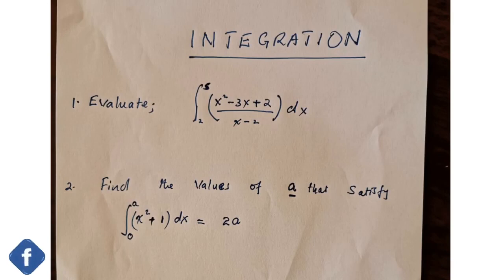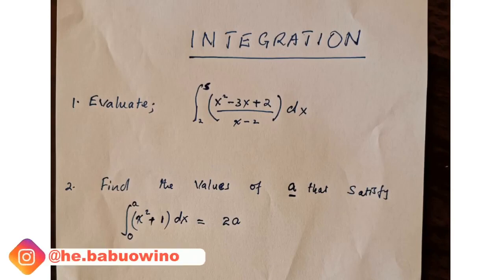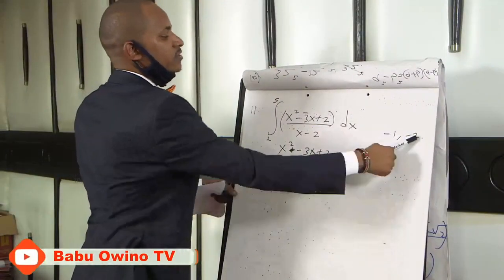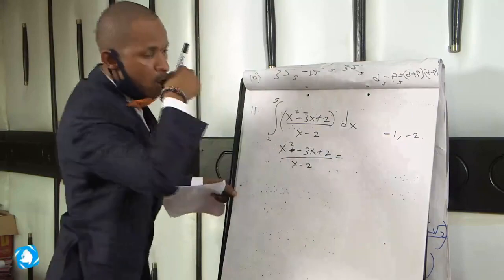Look for two numbers. If you multiply them gives you positive 2. If you add them gives you negative 3. So the two numbers are negative 1 and negative 2. When you add these two numbers gives you negative 3. But when you multiply them gives you positive 2.